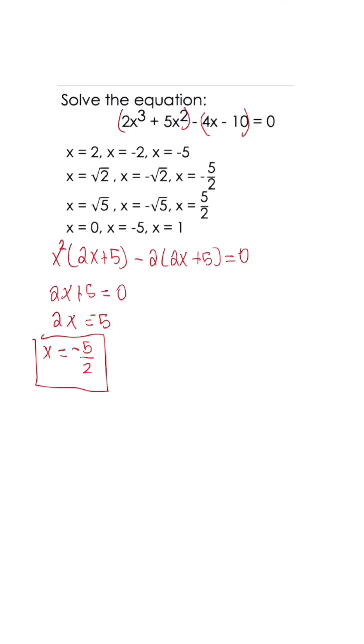Now our second factor is going to be a little bit different. We have x squared minus 2 equals 0. Once we simplify, we have x squared equals 2. We have to get rid of this exponent, so we're going to take the square root and do the same thing on the other side.